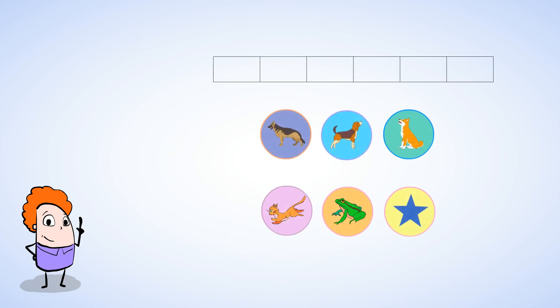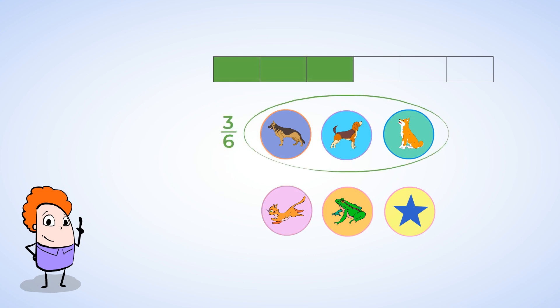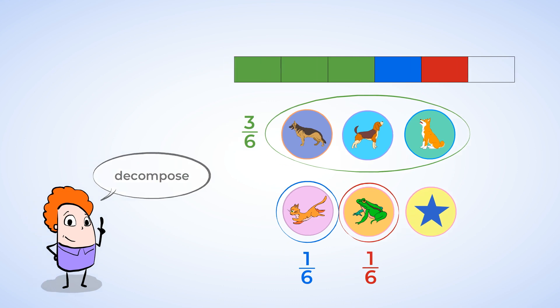Let's say you're organizing stickers, and you've found that five-sixths of all your stickers are animals. And then those can even be broken into smaller groups. Three-sixths of your stickers are dog stickers, one-sixth of the stickers are cat stickers, and one-sixth of the stickers are frog stickers.